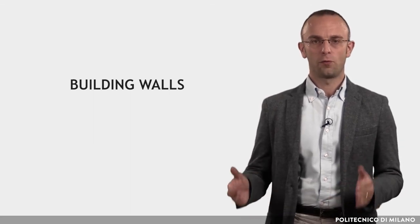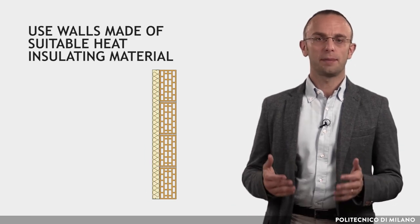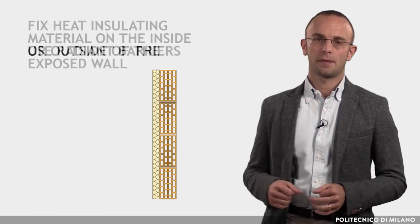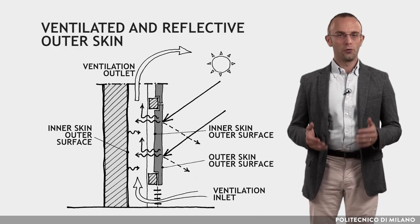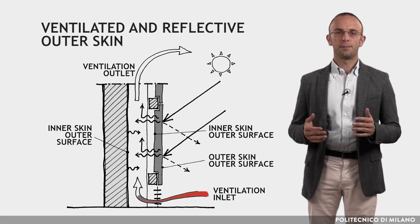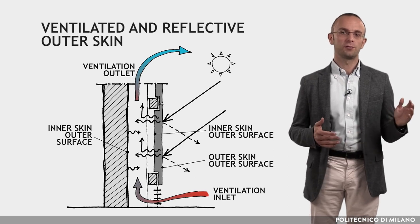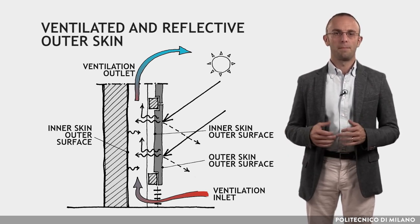As regards building walls, the thickness and the material can be varied to control heat gain. The resistance to heat flow through the exposed walls might be increased by: increasing the thickness of the wall; adopting cavity wall construction; using walls made of suitable heat insulating materials; fixing heat insulating material on the inside or outside of the exposed wall; using radiant barriers; and applying light-colored whitewash on the exposed side of the wall. An efficient, although expensive, solution to the problem of reducing radiant heat is a ventilated and reflective outer skin. Heat dissipation at night is more efficient than with a structure using outside insulation. A way of reducing the radiant heat transfer between the two skins is to use a low emission surface on the inside of the outer skin, thus realizing a radiant barrier. Bright aluminum foil can be used.